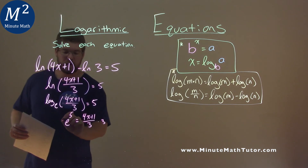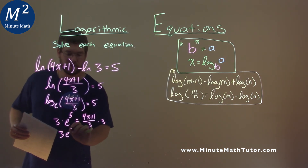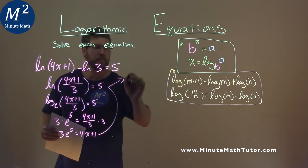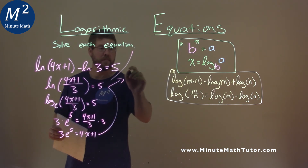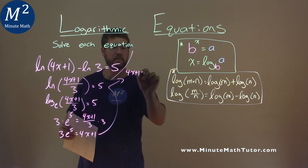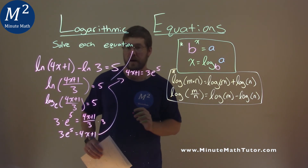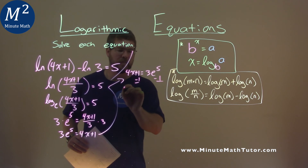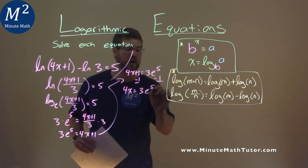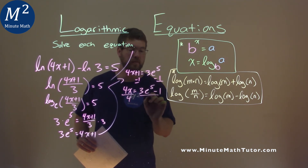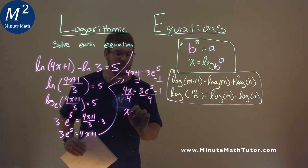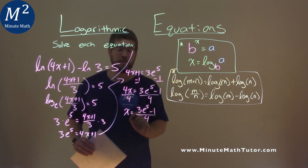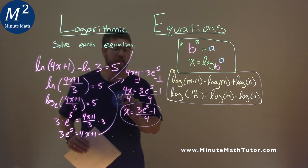Multiply both sides by 3, and we're left with 3e to the fifth power equals 4x plus 1. So 4x plus 1 equals 3e to the fifth power. Subtract 1 from both sides: 4x equals 3e to the fifth power minus 1. Divide both sides by 4. x equals 3e to the fifth power minus 1 over 4, and that is our final answer.